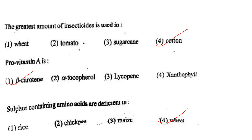Next one: Provitamin A is option 1, beta-carotene; option 2, alpha-tocopherol; option 3, lycopene; option 4, xanthophyll. Answer is option 1: beta-carotene.